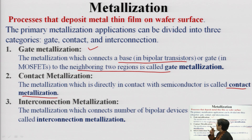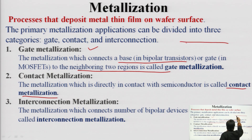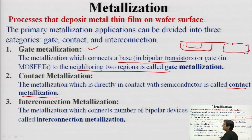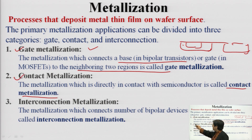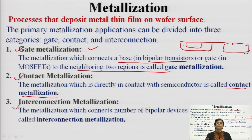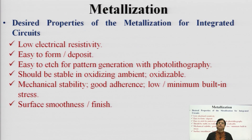Then comes interconnect metallization. For individual devices and other components of the circuit — for example, in a complementary MOSFET device you have NMOS and PMOS fabricated within a single wafer — the NMOS and PMOS fabricated in their respective areas will be interconnected using metallization. So the three categories are: gate, contact, and interconnect metallization, which are essentially done in IC fabrication.